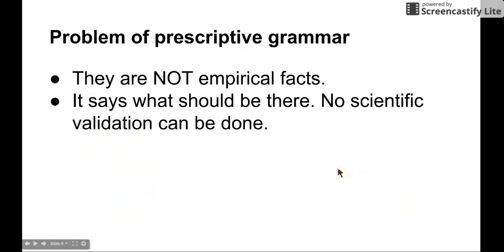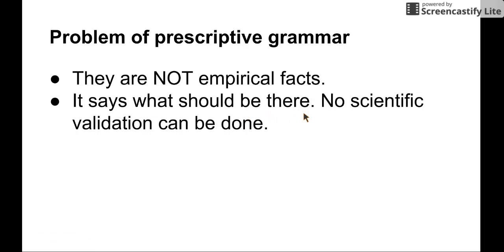There are some problems with prescriptive grammar as a scientific method. Prescriptive grammar rules are not empirical facts — they say what should be there. There is no scientific validation that can be done for prescriptive grammar. So we do not care about prescriptive grammar at all.